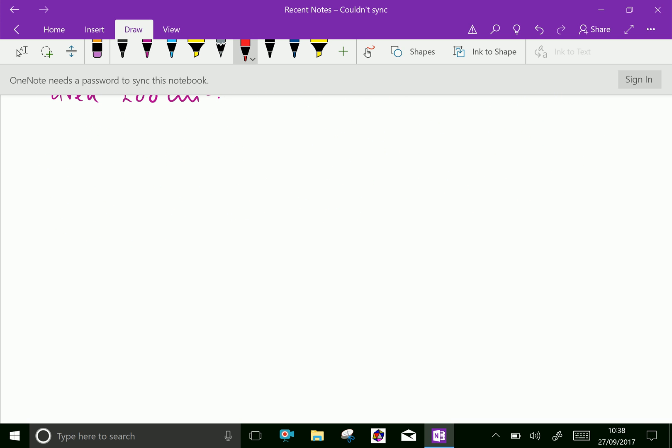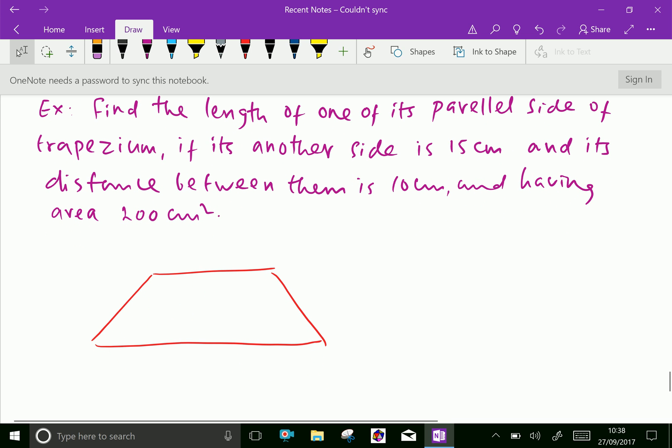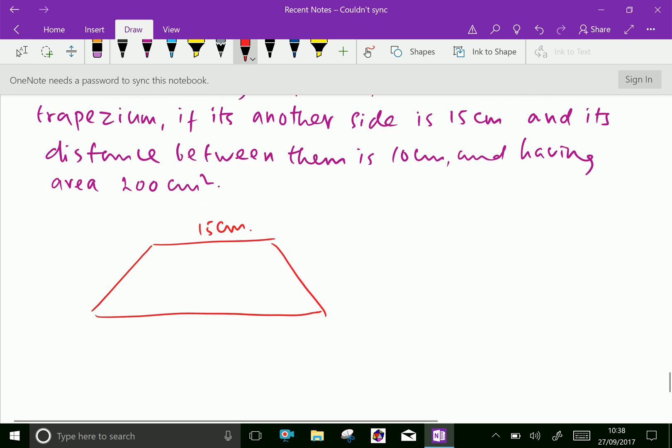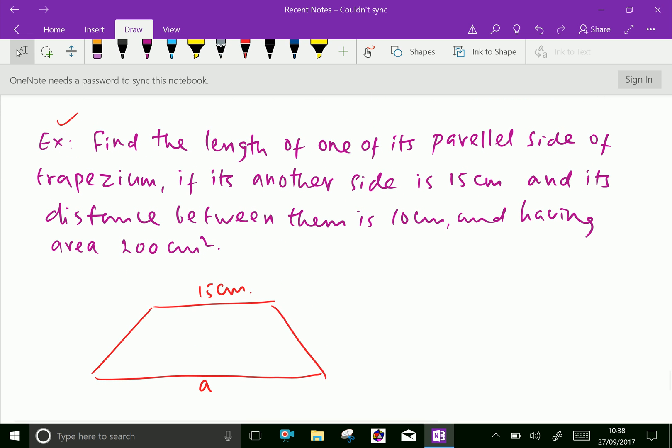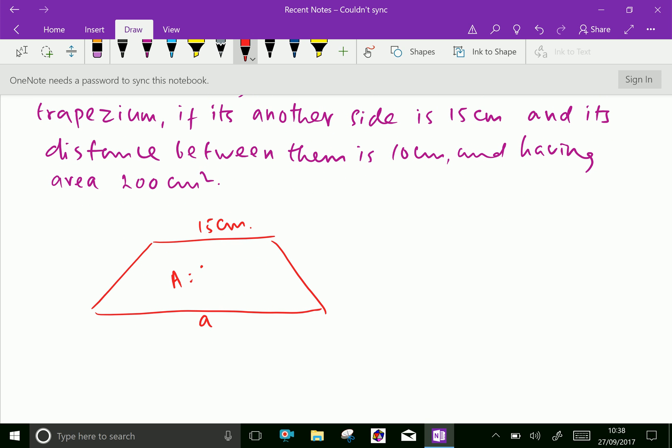Here, let us draw one trapezium. One of its parallel sides is given as 15 centimeter. Let the other side be A. Also, the area is given equal 200 centimeter squared.